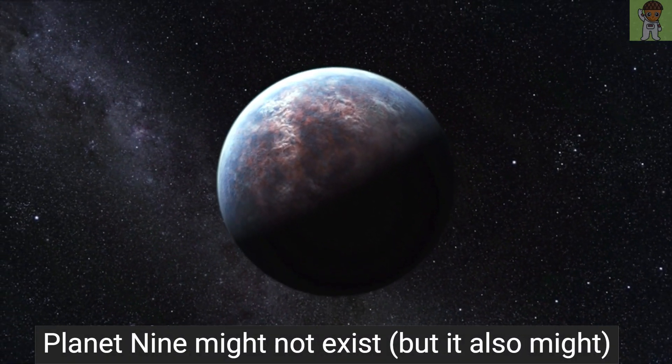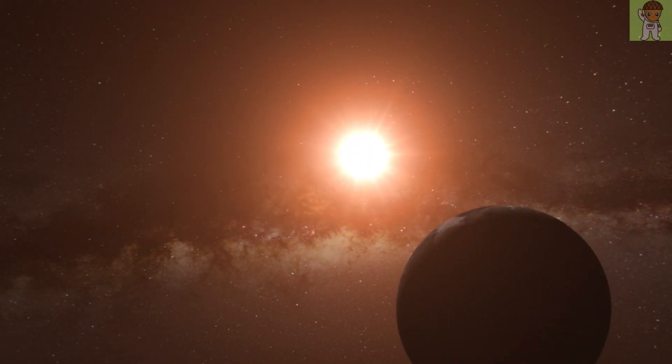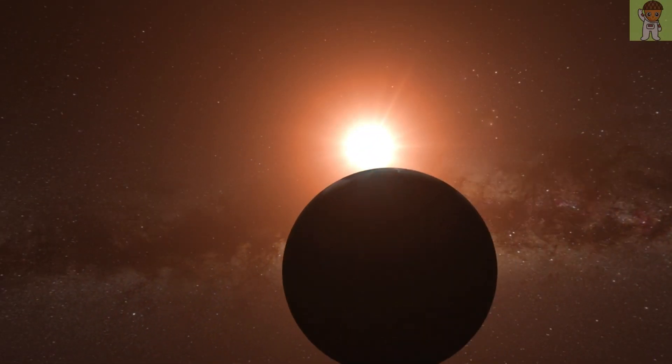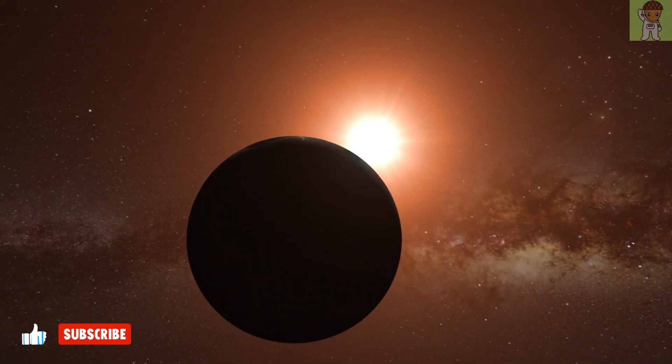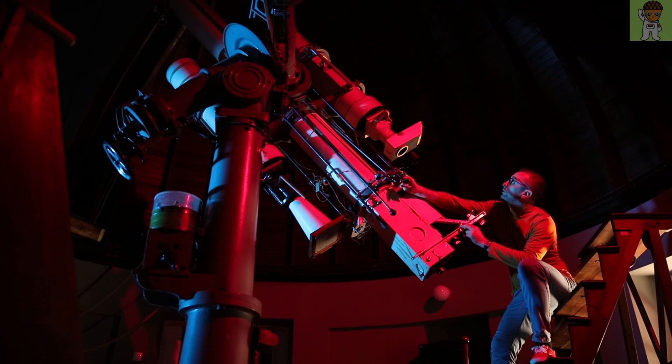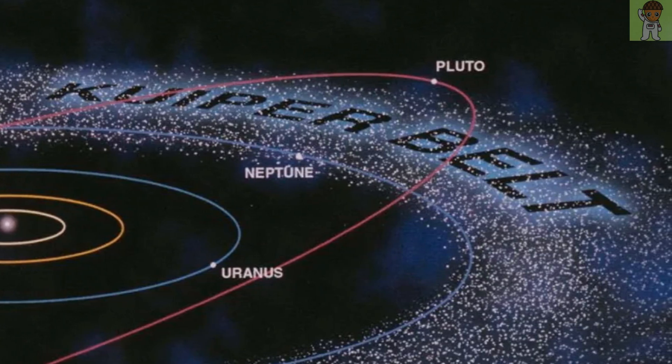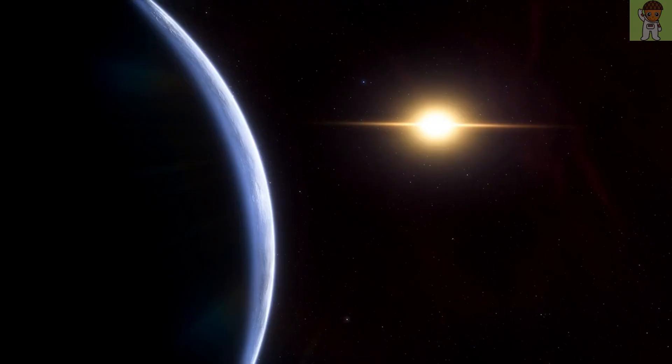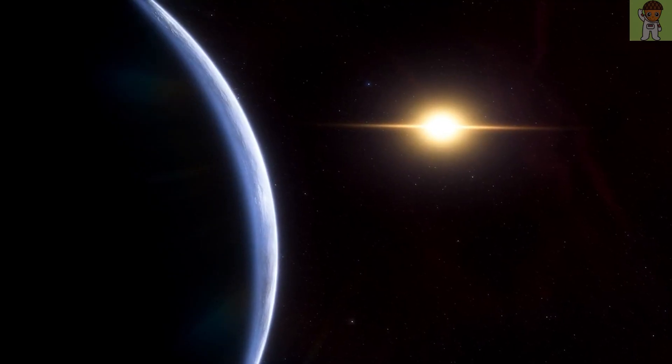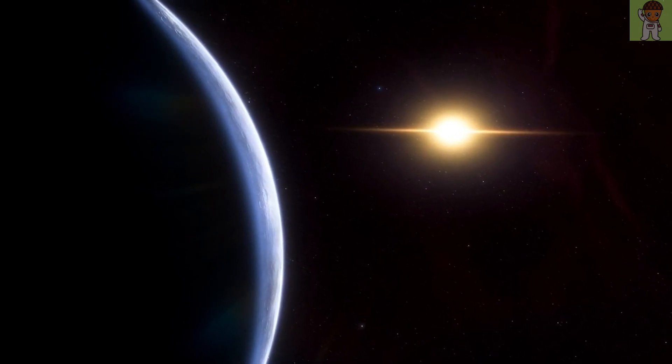Planet Nine might not exist, but it also might. Planet Nine is a hypothetical planet that is rumored to exist somewhere in the outer reaches of the solar system. The Planet Nine hypothesis arose when astronomers detected gravitational anomalies in the Kuiper Belt, a group of comets and asteroids beyond the orbit of Neptune. These anomalies suggest that an invisible planet up to 10 times the size of Earth is lurking beyond the Kuiper Belt.